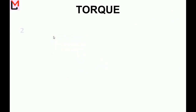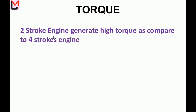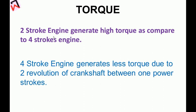Torque: A two-stroke engine generates high torque as compared to a four-stroke engine. A four-stroke engine generates less torque due to two revolutions of the crankshaft between one power stroke.